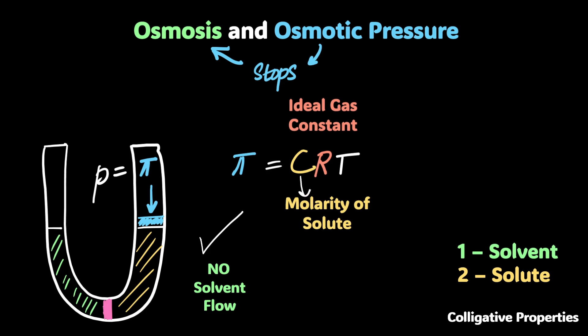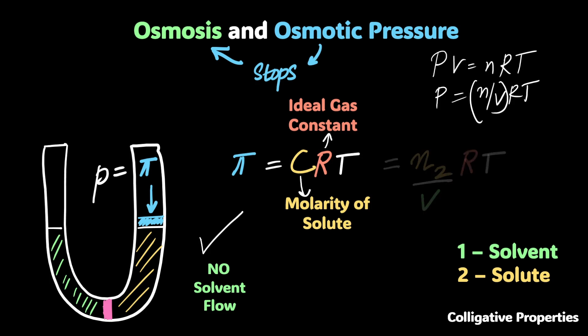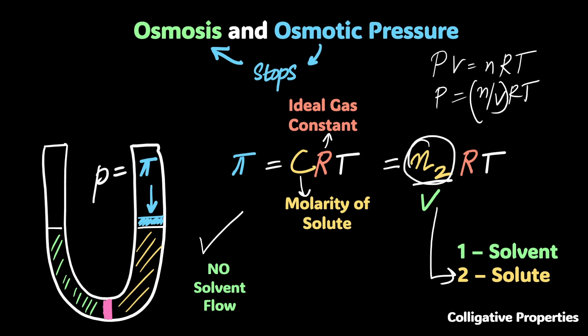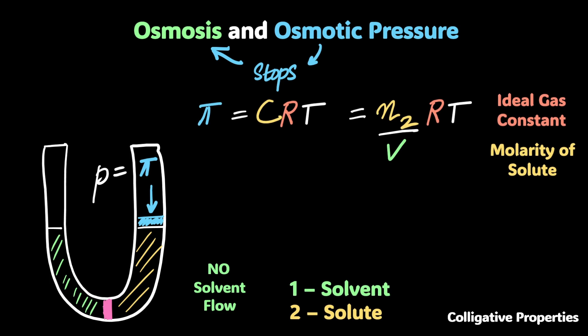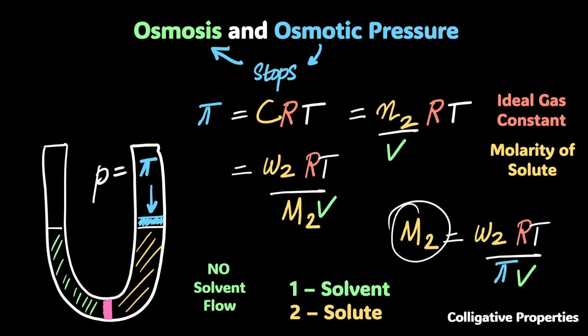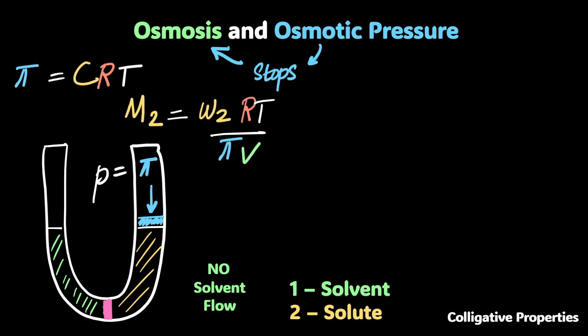Osmotic pressure pi was found to be equal to C times R times T, where C is the molarity of the solute and R is the ideal gas constant. This looks a lot like the ideal gas equation PV = nRT, where P = (n/V)RT. That's because both assume no interactions between particles — ideal cases. We can write this as π V = n₂ R T, where subscript 2 is the solute. The number of moles of solute can be written as mass divided by molar mass (W₂/M₂), so you can find the molar mass of the solute if you know pi.